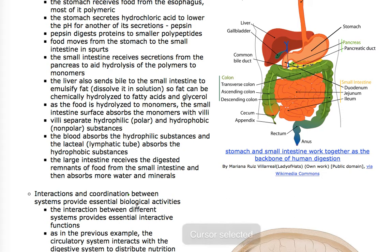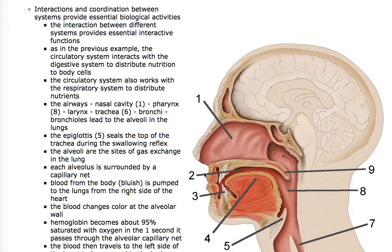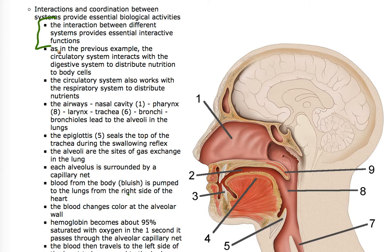That's a lot of interaction, and that's just one of the human systems. Interactions and coordination between different systems provide all kinds of essential biological activities. The circulatory system interacts with the digestive system to distribute nutrition to body cells, and the circulatory system also works with the respiratory system to distribute nutrients.